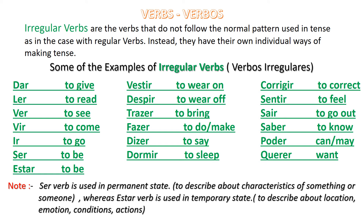Now let's talk about irregular verbs. Why are they called irregular verbs? Irregular verbs are the verbs that do not follow the normal pattern used in the tense. Instead, they have their own individual way of making tense. Now I am going to pronounce some of the irregular verbs with their meaning in English. You can just repeat with me.